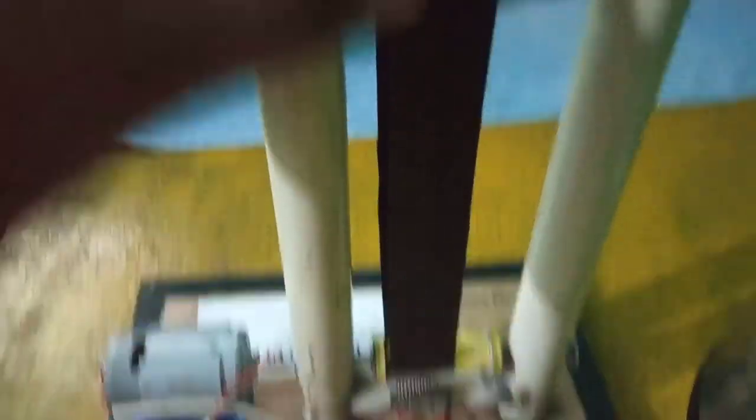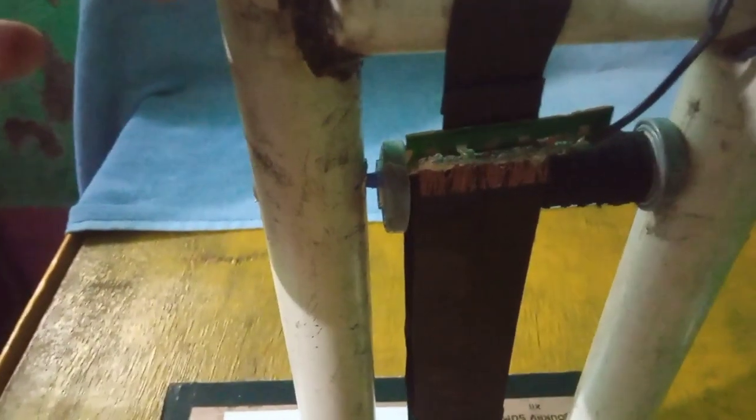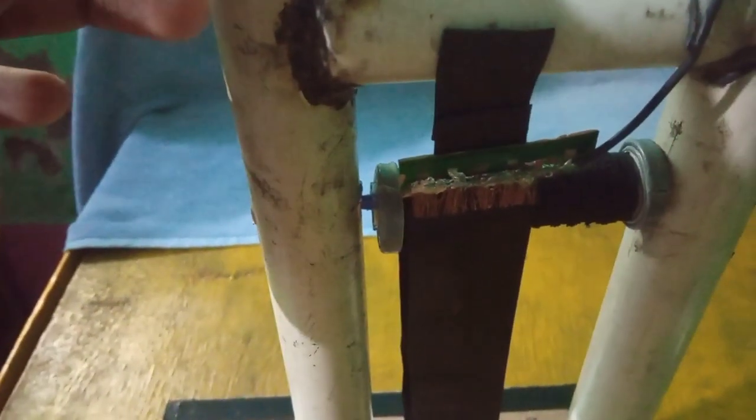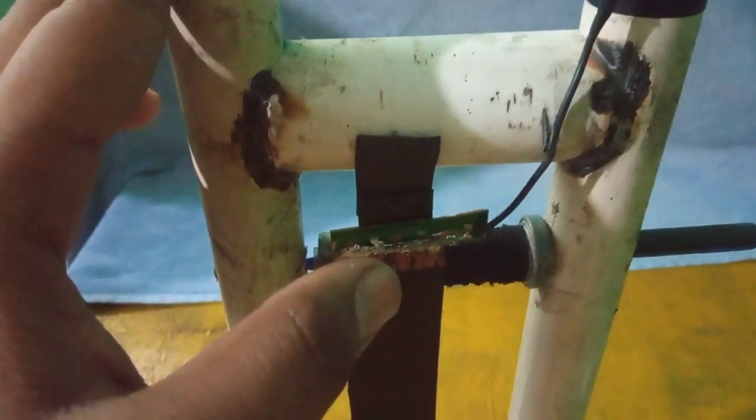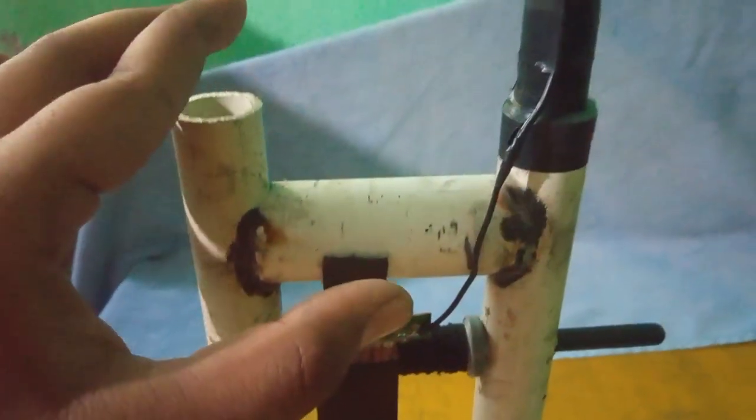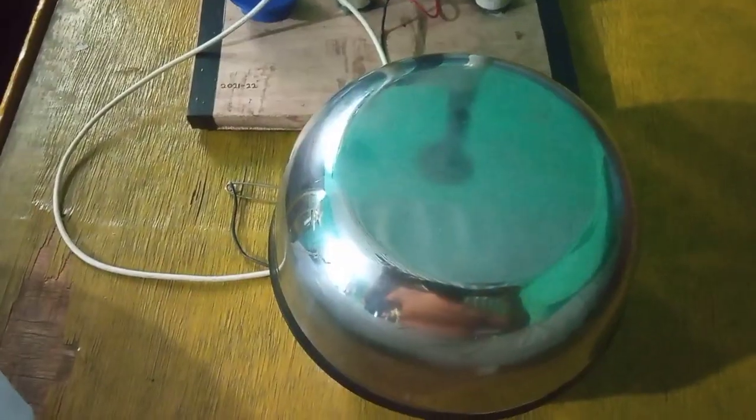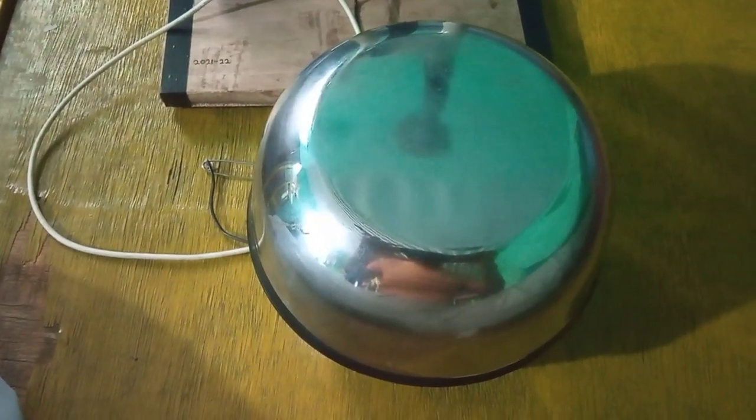The belt gains positive charge and it travels from down to up. The upper metal spikes take away discharges. The gathered charges are transferred using this wire to this metal tip.